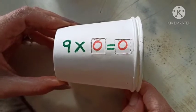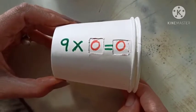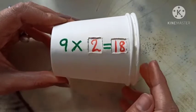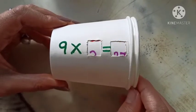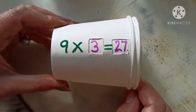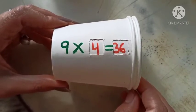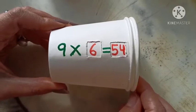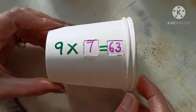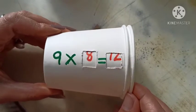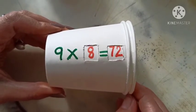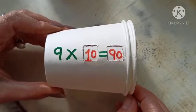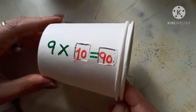Let's recite with me. Table of 9. 9×0=0, 9×1=9, 9×2=18, 9×3=27, 9×4=36, 9×5=45, 9×6=54, 9×7=63, 9×8=72, 9×9=81, and 9×10=90. So in this way we can learn tables.